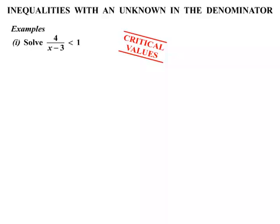The concept we're going to consider is the idea of critical values. The first critical value comes from the denominator. We realize that we cannot divide by 0, so x minus 3 cannot equal 0. As a result, x cannot equal 3.